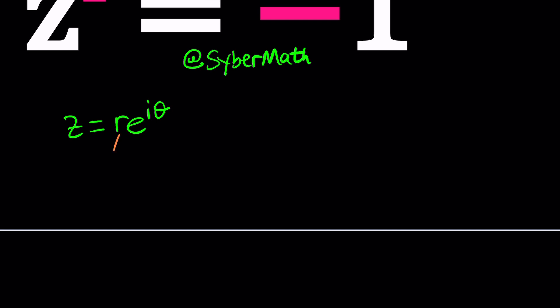r is the modulus or the absolute value of a complex number. Again, I go over these in detail in lecture notes, I mean videos, and theta is the argument or the angle.